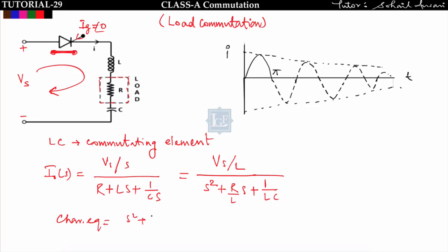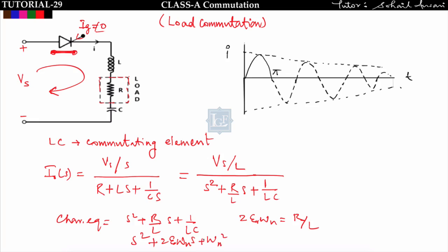The characteristic equation of I_o(s) will be s² + (R/L)s + 1/LC. Matching this with the standard second-order equation s² + 2ζωₙs + ωₙ², we get 2ζωₙ = R/L. Therefore, ζ = R / (2ωₙL).